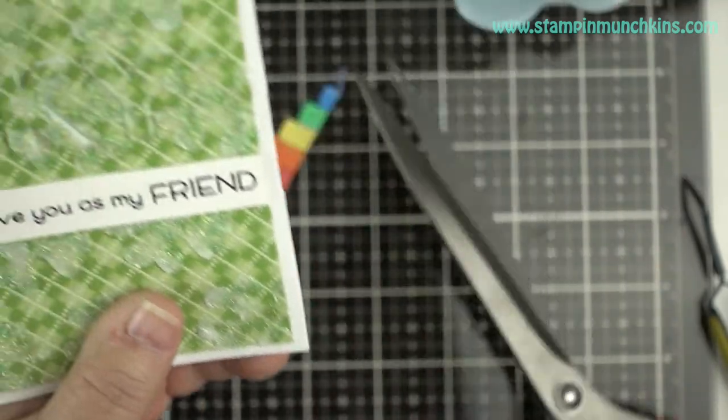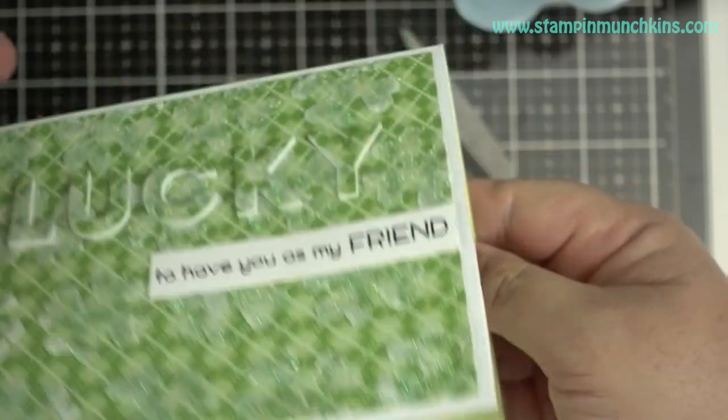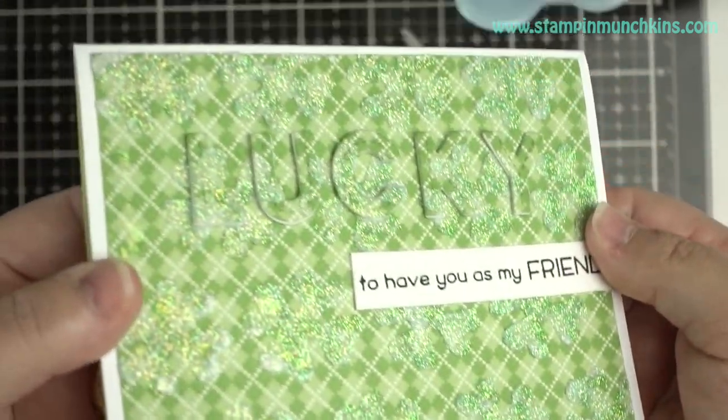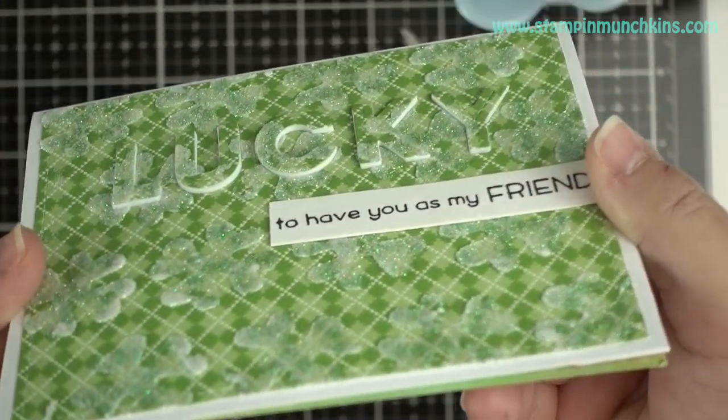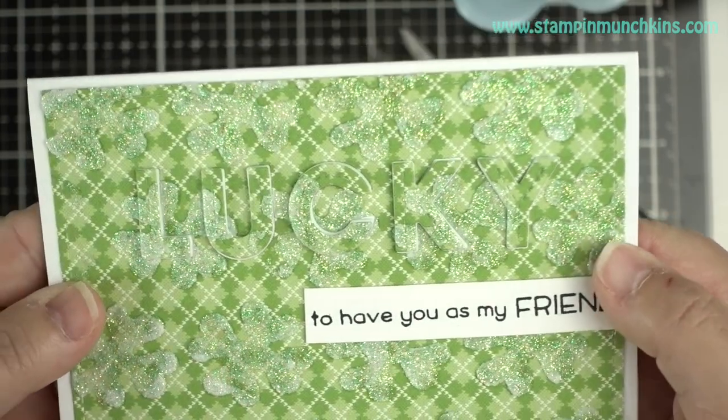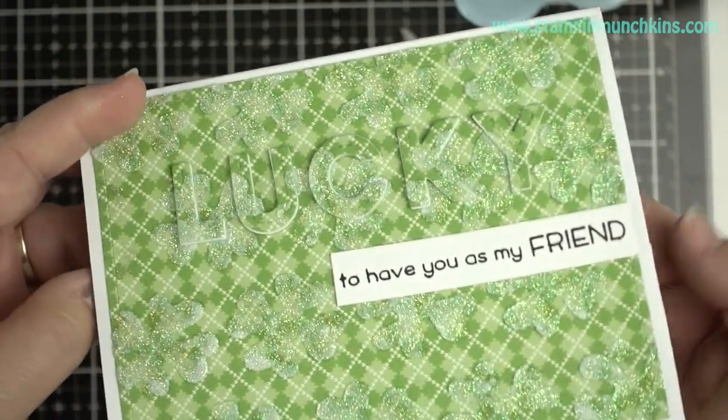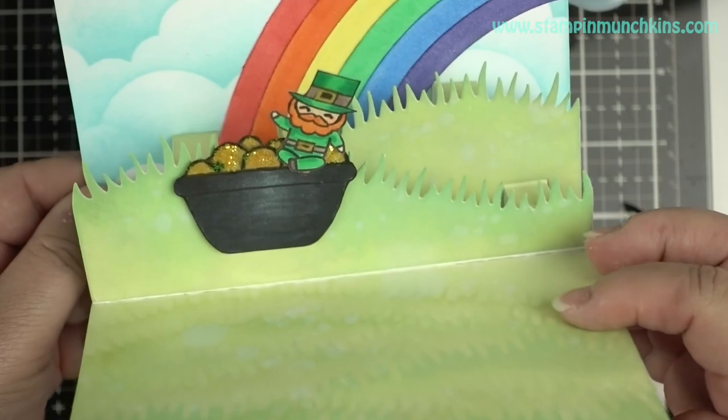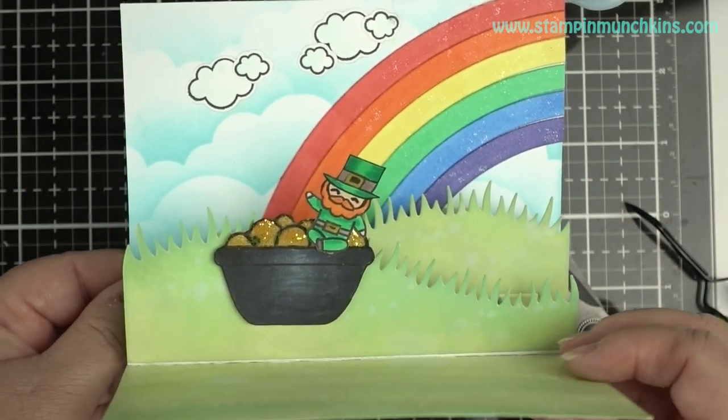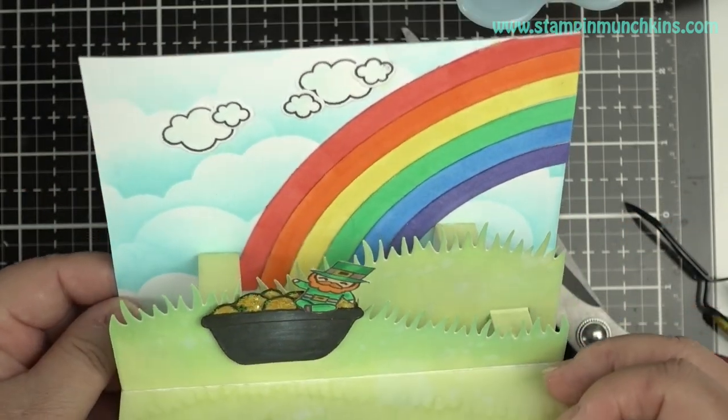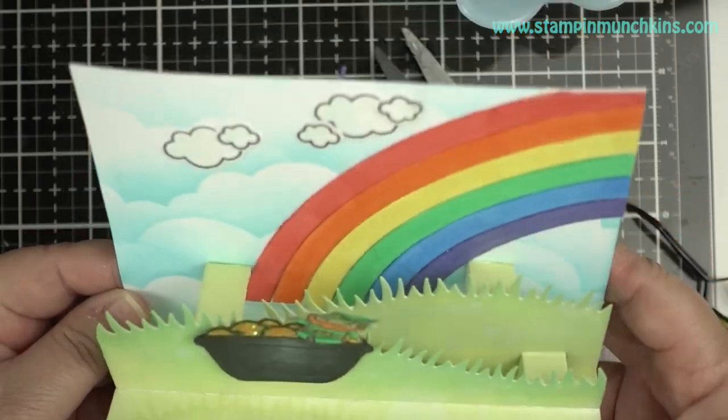He slid down the rainbow and he's sitting on his pot waiting for his friends to come by. I'm just using my long trimmer scissors to cut the excess rainbow off. This is the finished card - you can see it says Lucky, it's popped up a little bit, and 'to have you as my friend.' Here's the leprechaun on that shiny rainbow.